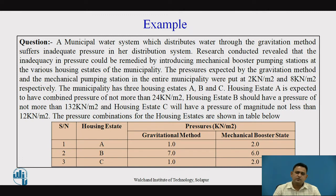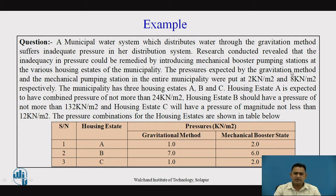Here is the example which has the case study of the water supply system. They are using two methodologies: one is the gravitational methodology and the second is mechanical boosting or booster stations for the supplying of water. They are conducting research and saying that the pressure expressed by the gravitational method and the mechanical pumping station in the entire municipality were put at 2 kN per meter square and 8 kN per meter square respectively. The municipality has three pumping stations: A, B, and C. Pumping station A is expected to have a combined pressure of not more than 24 kN per meter square.